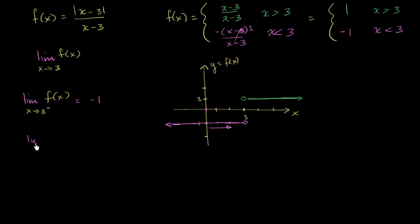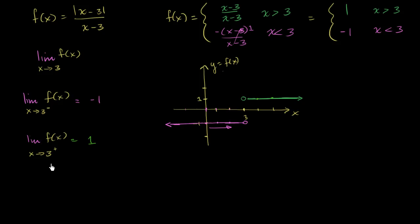Now let's think about the limit of f of x as x approaches 3 from the positive direction, from values greater than 3. When x equals 5, f of x equals 1. When x equals 4, f of x equals 1. When x equals 3.0000001, f of x equals 1. So it seems to be approaching positive 1. We seem to be approaching a different value from the left than from the right.